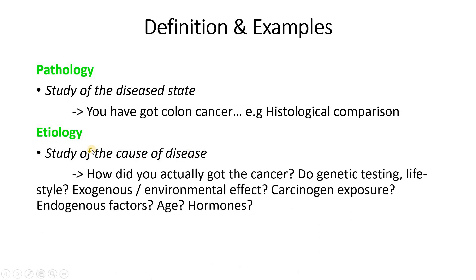So there are many many different things for etiology to occur. For example, how did the person actually get the cancer? So one would go and do genetic testing — does the patient have a genetic predisposition run over the family that makes them exposed to cancer?